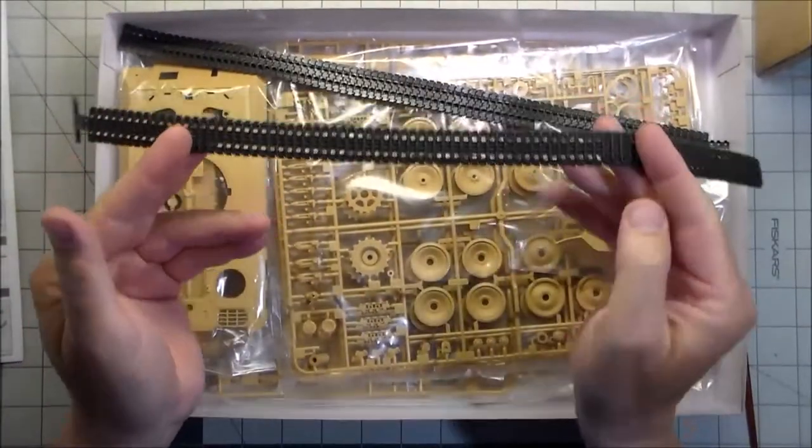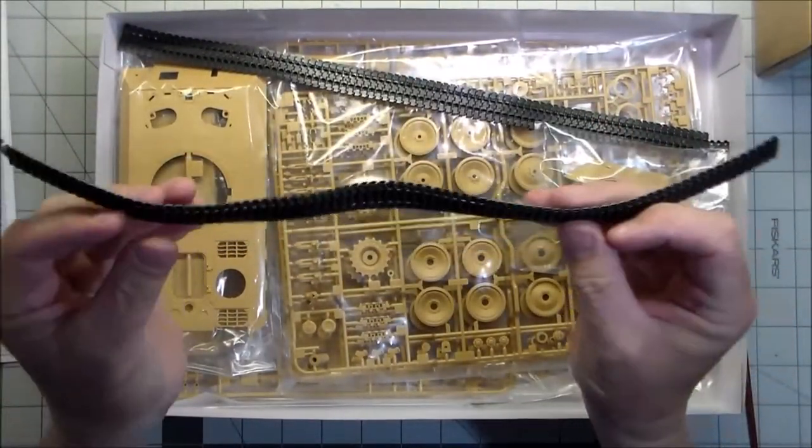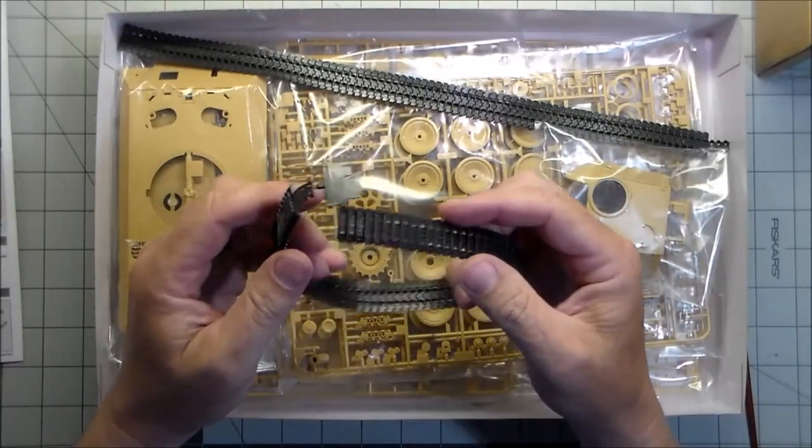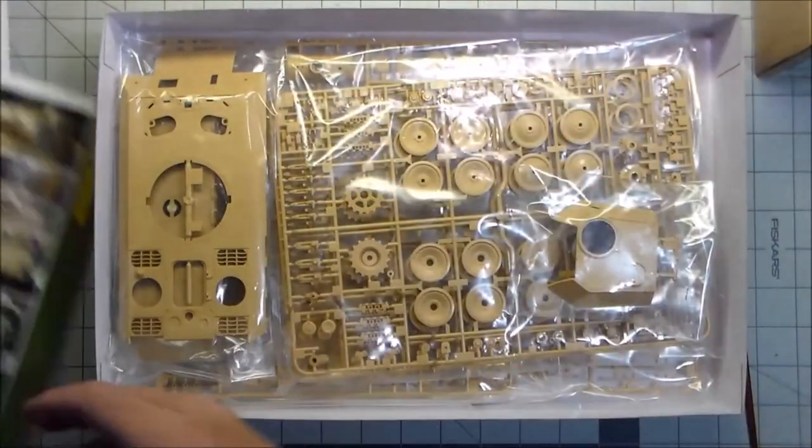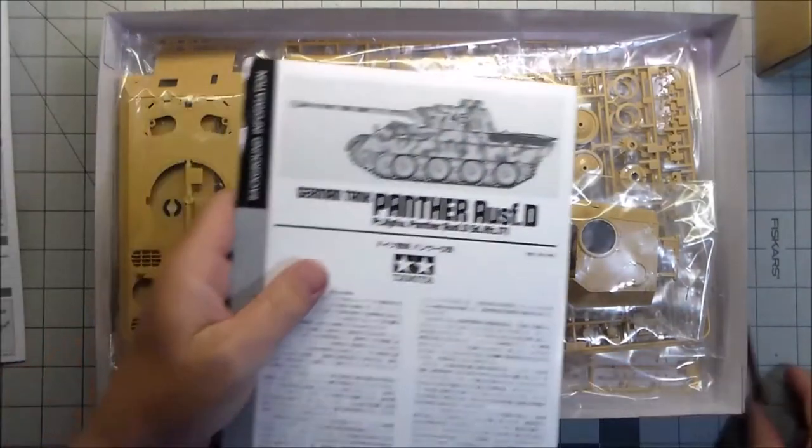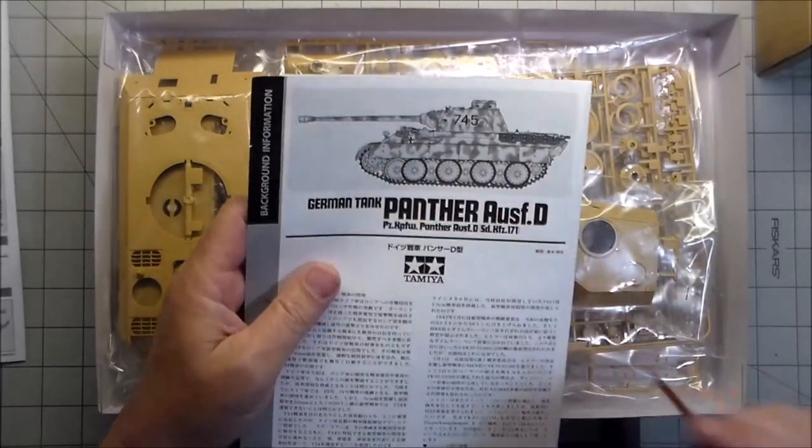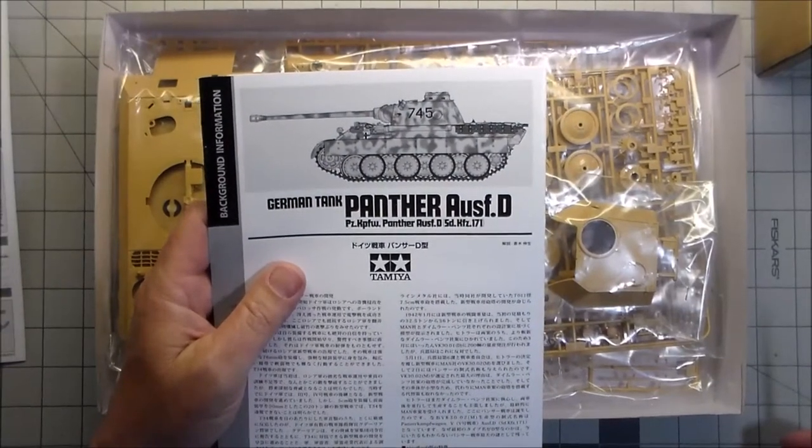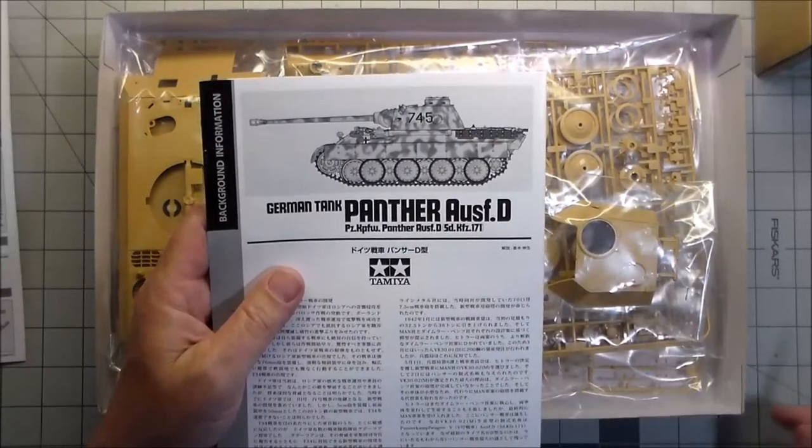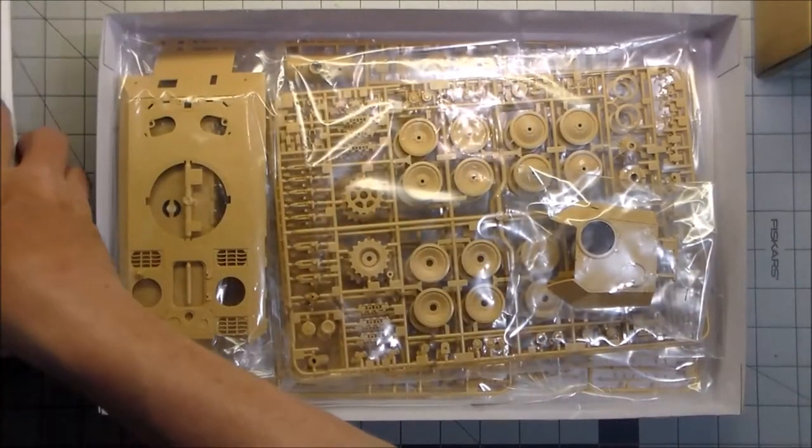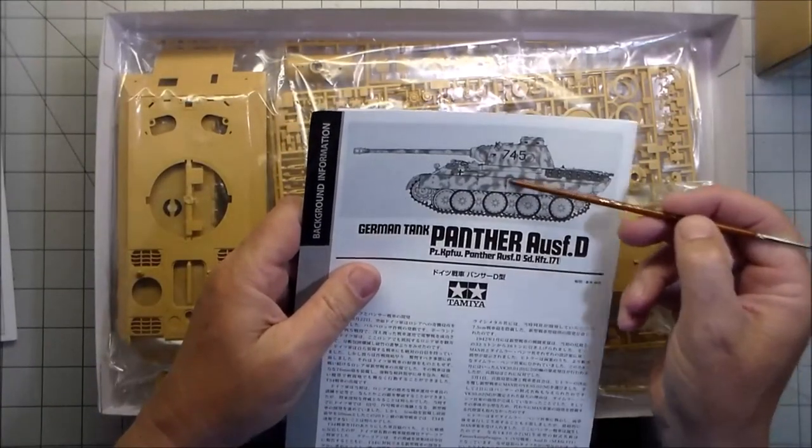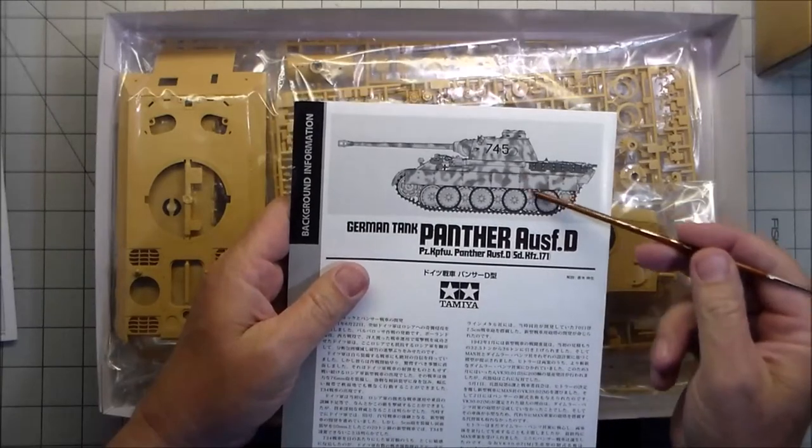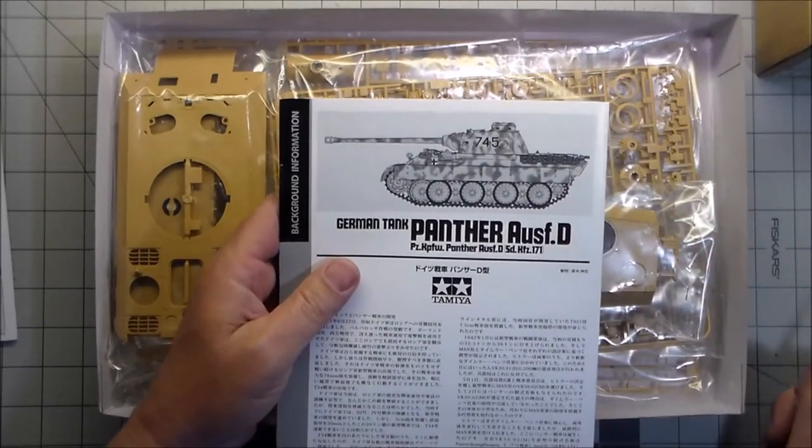In this case, since this tank has side skirts on it, you wouldn't even see the sag or lack thereof on the tracks, so you could get away with using these tracks. Some people that might bug, some people it might not. If you're modeling it with missing plates on the side skirts, you'd probably want to do it more toward the back so you don't see that there's no sag in the track.